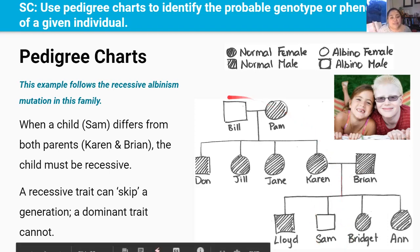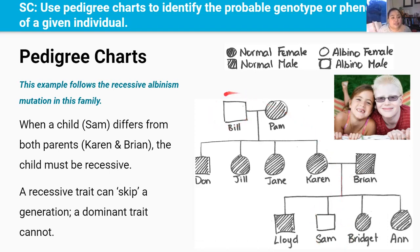We see that Sam's grandfather Bill also had albinism, but the albinism trait skipped a generation. It's important to know that only recessive traits can skip a generation, whereas dominant traits are always seen and cannot skip a generation.